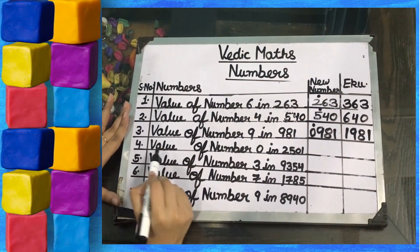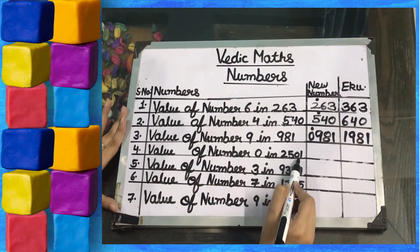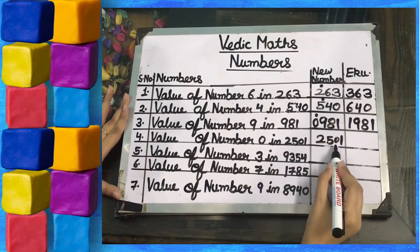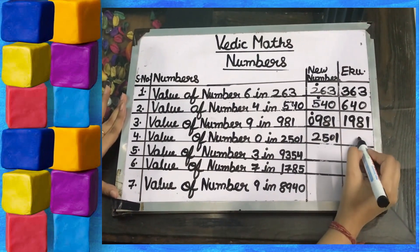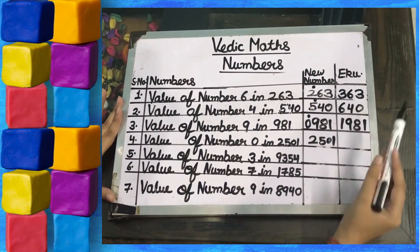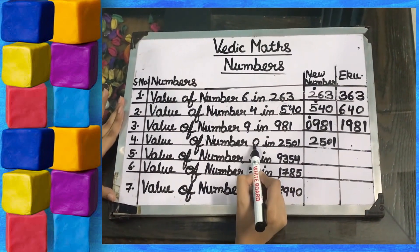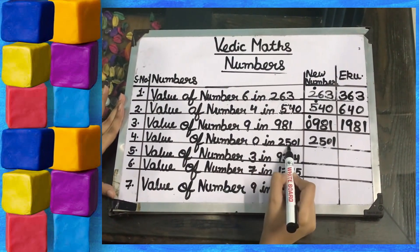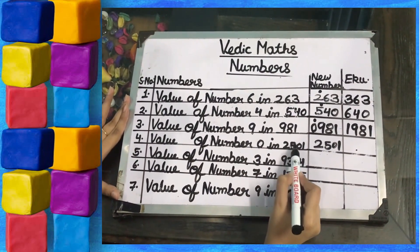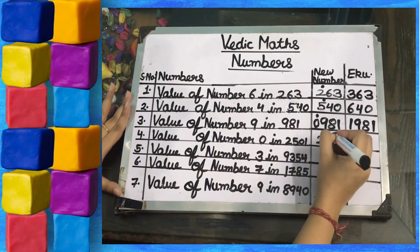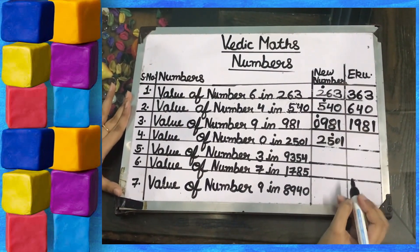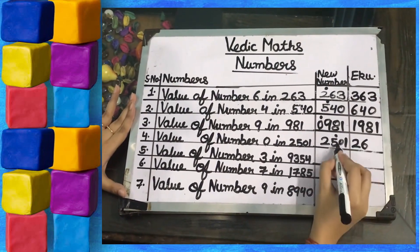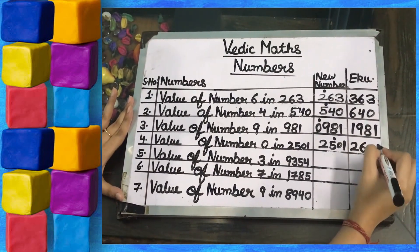Fourth part — value of number 0 in 2501. We write the number 2501. We need to find the Ekadiken Purven, which means plus 1 in the previous digit. The previous digit of 0 in 2501 is 5, so we put a dot on 5. The 2 remains the same; 1 plus 5 is 6; the 0 remains the same; and 1 remains the same.